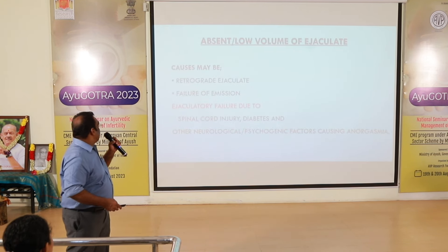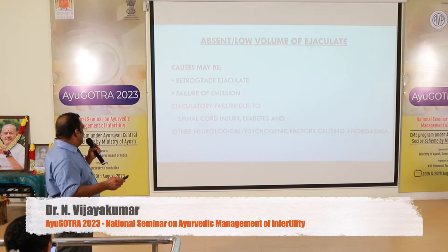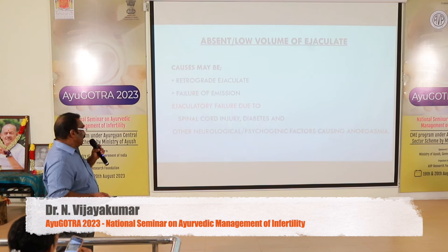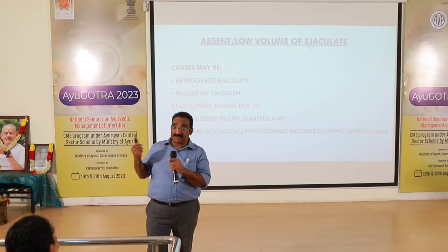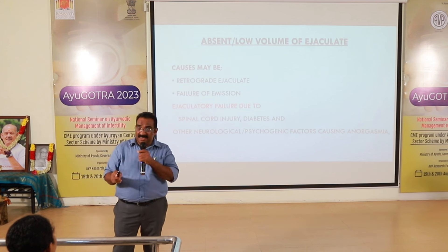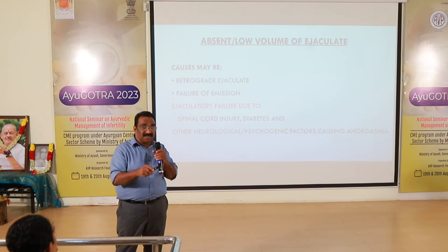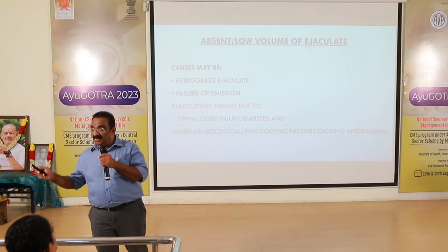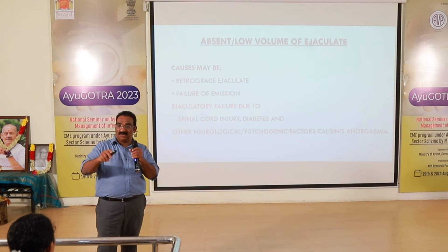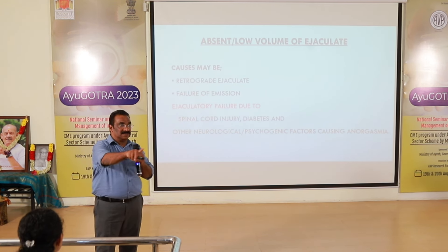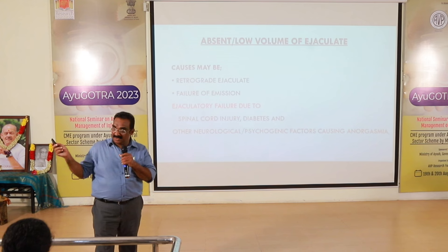Absent or low volume of ejaculate may be caused by retrograde ejaculation, failure of emission, ejaculatory failure due to spinal cord injury, diabetes, or other neurological or psychogenic factors causing anorgasmia. To diagnose retrograde ejaculation, the patient is advised to avoid urinating soon after ejaculation, and post-ejaculated urine is examined under high microscopy. More than 50 spermatozoa — motile, non-motile, or slightly motile — in a single high-power field confirms retrograde ejaculation.